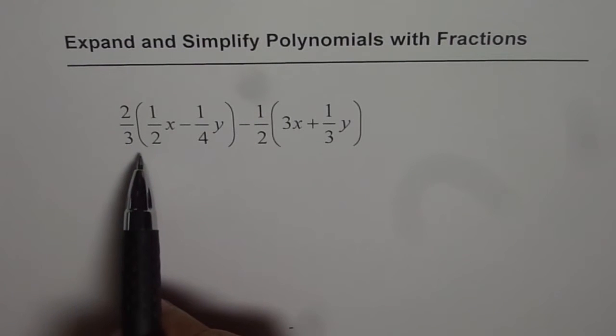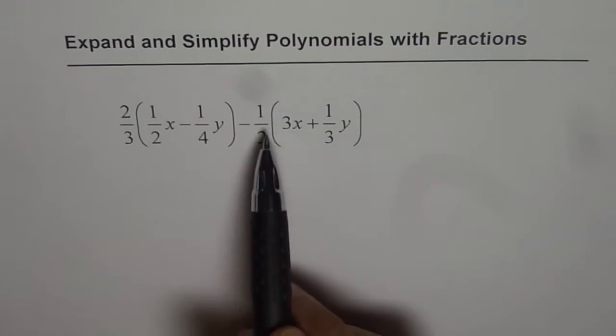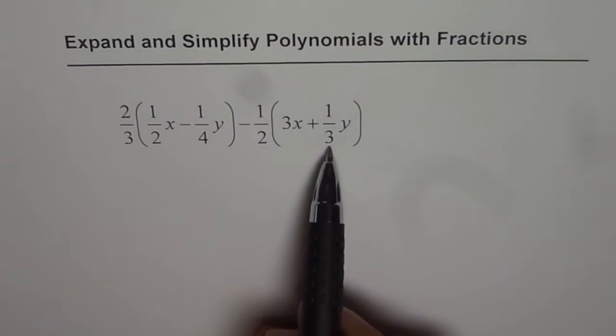2 over 3 times within brackets half x minus one-fourth of y, take away half of 3x plus one-third of y.